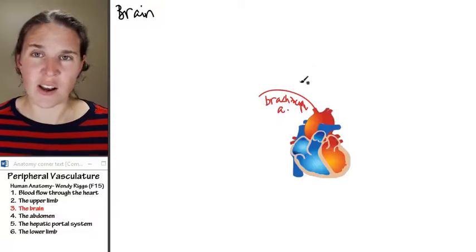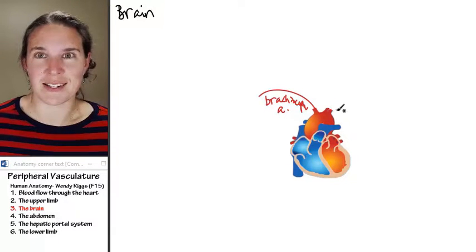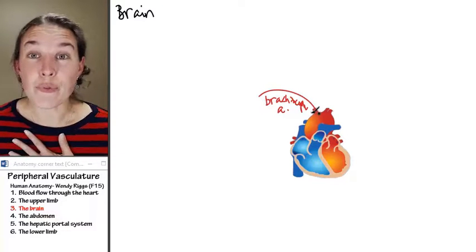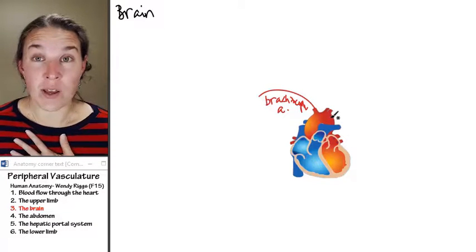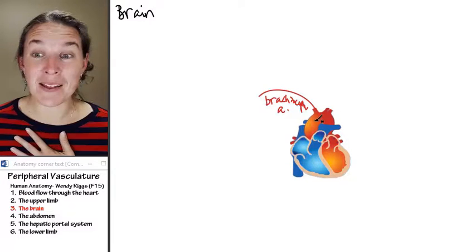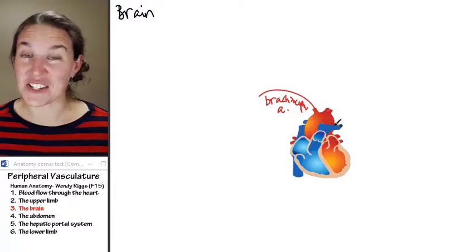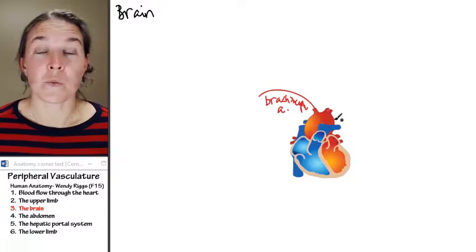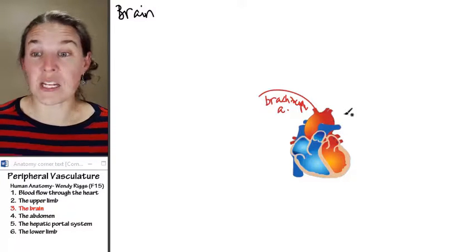I've already drawn it out once, so you know how to do it. Every single branch off of the aortic arch has some significant role in feeding the brain.